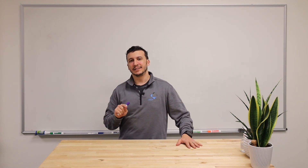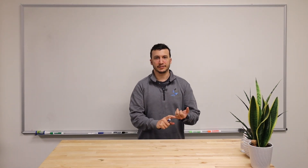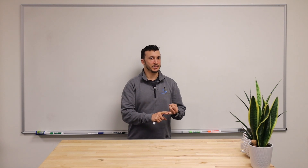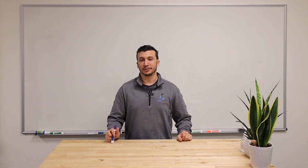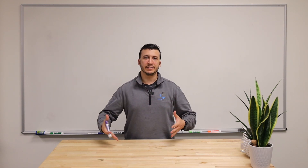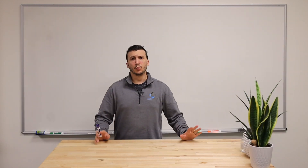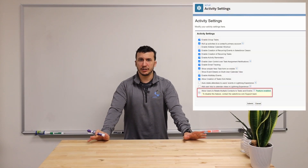A who is an object in Salesforce that represents a human being — basically a person. A contact is a who, a user is a who, and a lead is also a who. A who means it's something you can relate to things like a task. If you're familiar with the back end of Salesforce, you'll know it as the WhoId. In the user interface you might see this as the Name field, so when you add a task to a record you might see Name and Related To.